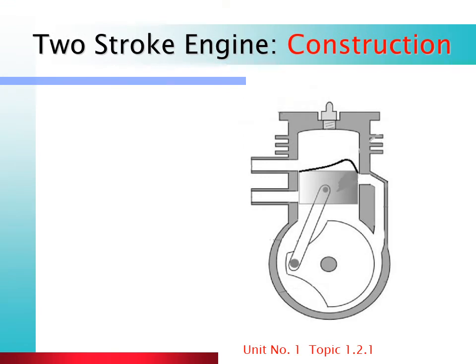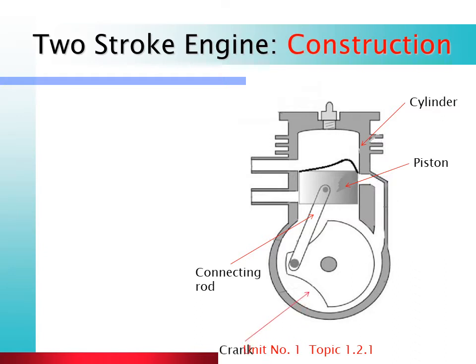Let's see the construction of the 2-stroke engine. Looking at the diagram of a 2-stroke petrol engine: here we have the engine cylinder, and inside the cylinder is a piston which reciprocates. There is a connecting rod and crankshaft. The piston reciprocates and converts its motion through the connecting rod to rotary motion of the crank. The crank is enclosed in an airtight crankcase.